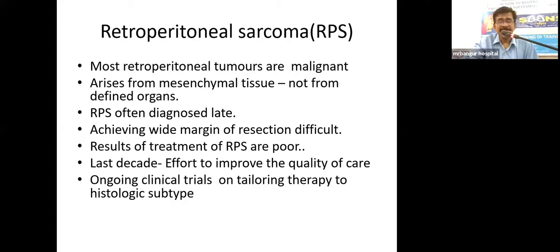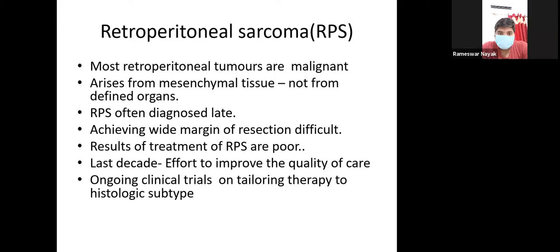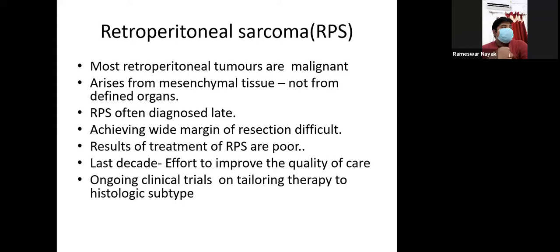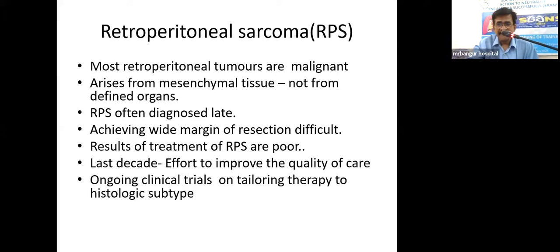Most retroperitoneal tumors are malignant. These sarcomas arise from mesenchymal tissues in the retroperitoneum. Due to their posterior location and not pressing on important structures, these tumors often grow to a large size and present quite late. Another limitation is that unlike extremities where we take a wide margin of five centimeters for excision, in the retroperitoneum — due to close proximity to vital structures — it is not always possible to have a wide margin of resection.